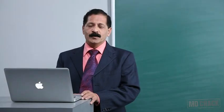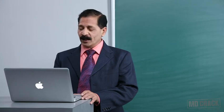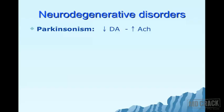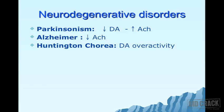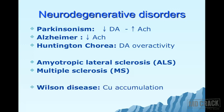Welcome. We're going to discuss neurodegenerative disorders. The disorders include: Parkinsonism, associated with dopamine deficiency and acetylcholine excess; Alzheimer's, associated with acetylcholine deficiency; Huntington's Chorea, with dopamine overactivity; amyotrophic lateral sclerosis (ALS); multiple sclerosis (MS); and Wilson's disease, associated with copper accumulation.